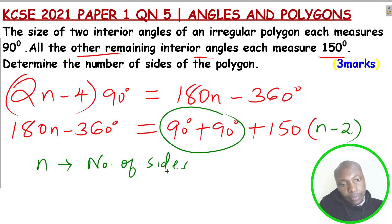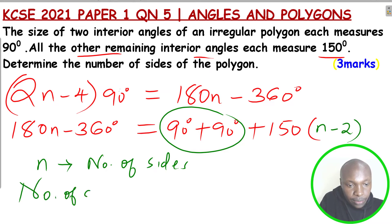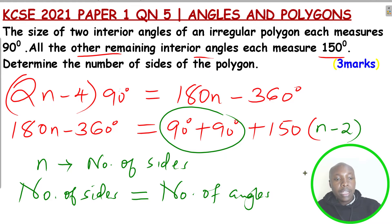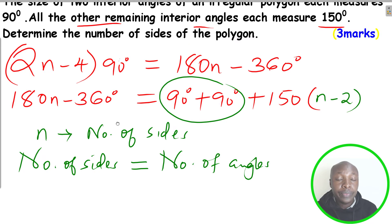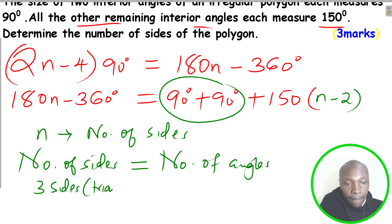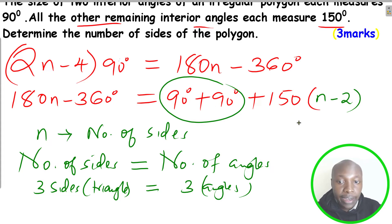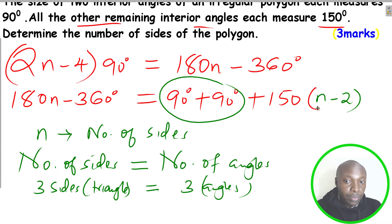The number of sides equals the number of angles in any polygon. For example, a triangle has three sides and three angles. A quadrilateral has four sides and four angles. So you can see the relationship between the number of sides and the number of angles. In this case, n represents the number of sides. We've already taken two angles, and the total number of sides is n, so the remaining angles will be n subtract 2.